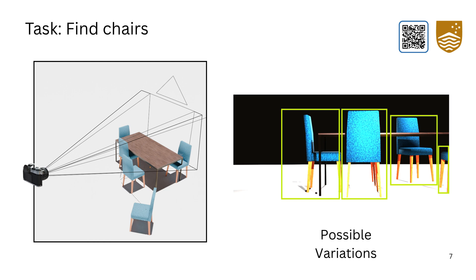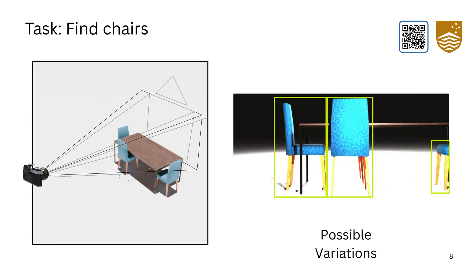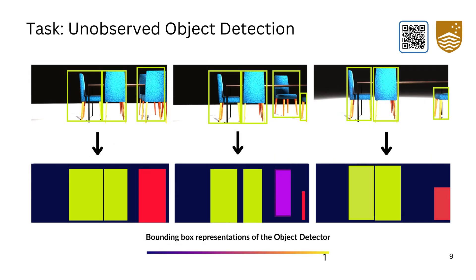It's a hard inverse problem because different layouts in 3D can look identical in 2D. Humans easily handle this problem and yet it's underexplored in machine vision. And thus, we introduce our novel task of unobserved object detection.